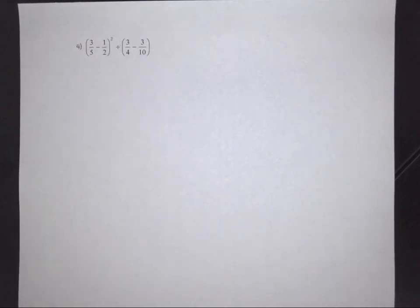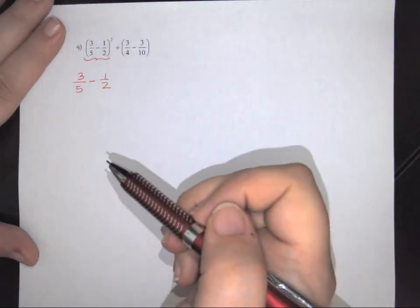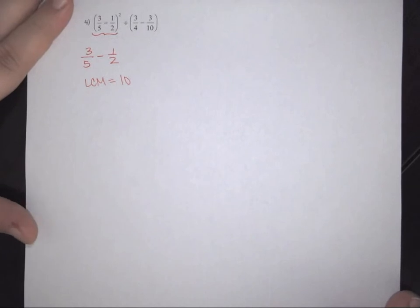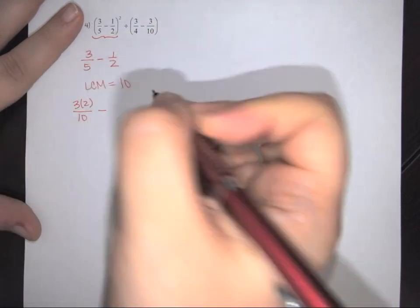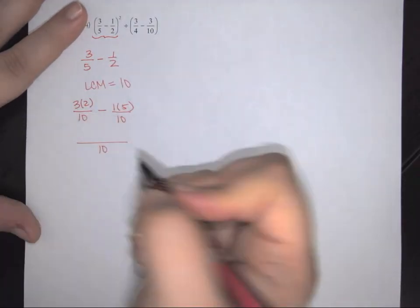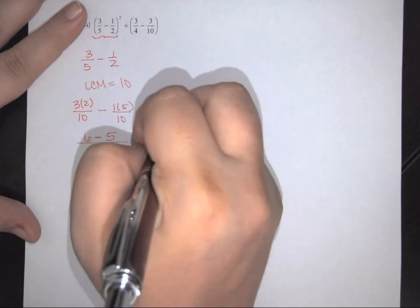One final example to help you. Notice this one has parentheses. Starting left to right, we work inside the left parentheses first: 3/5 minus 1/2. When looking at 3 and 5, the least common multiple would be 10. I turn 5 into 10 by multiplying by 2: so this becomes 3 times 2 over 10, and I'm subtracting 1 times 5 over 10. The denominator is 10; 3 times 2 is 6 minus 5. So this gives me 1 over 10.